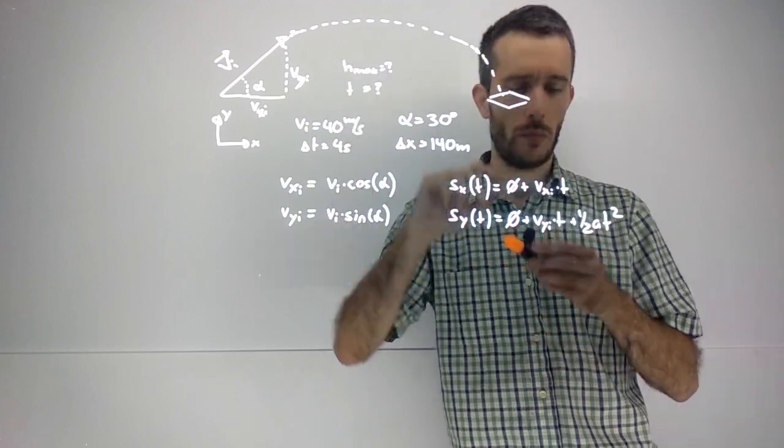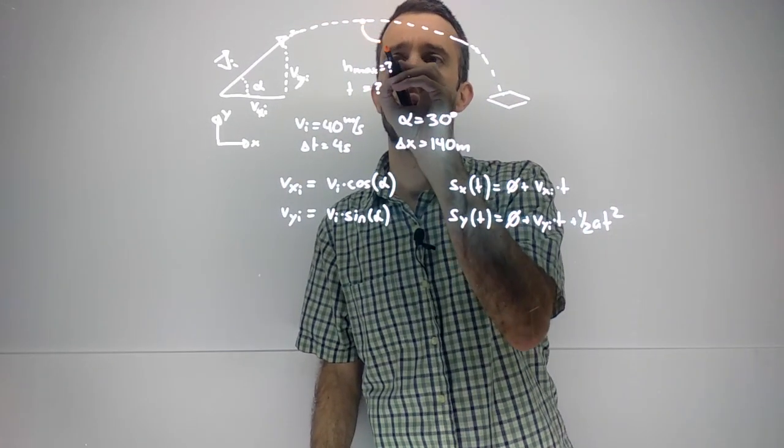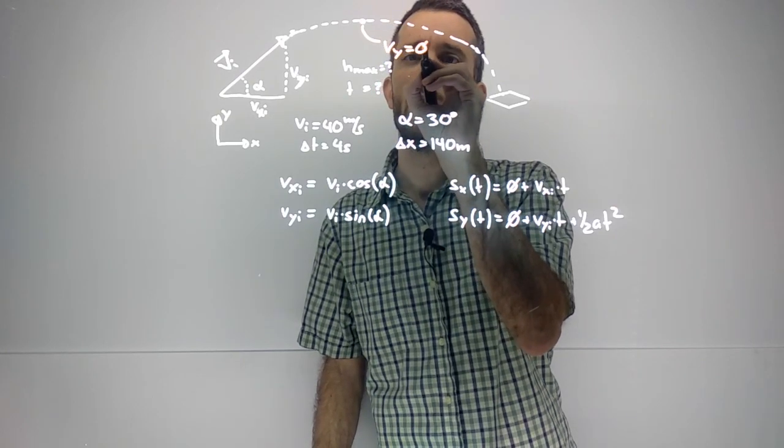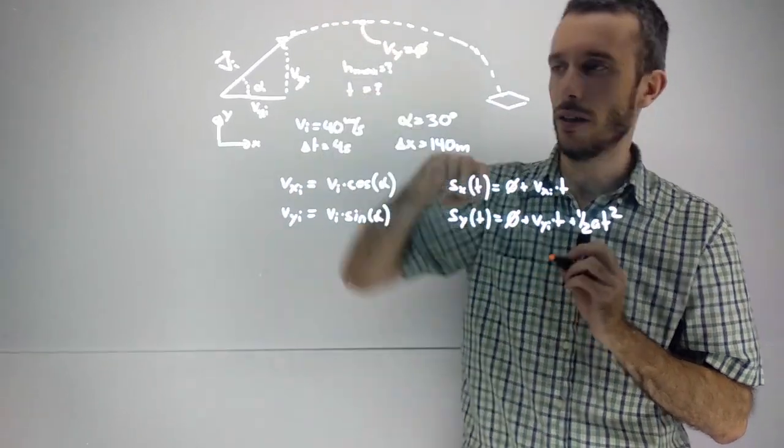Now what does it mean if we reach the highest point? Reaching the highest point means that the velocity in the y direction must be zero—we are changing from a positive y velocity into a negative y velocity.